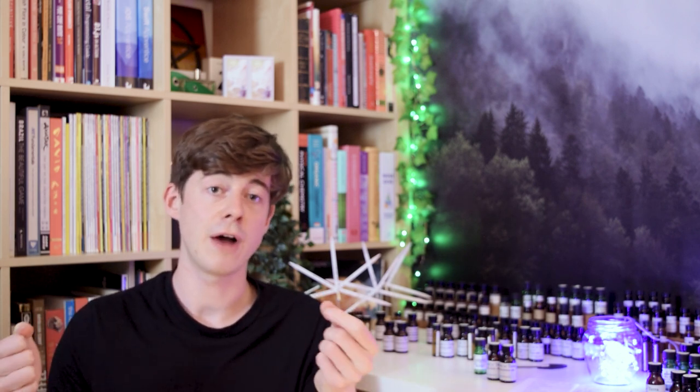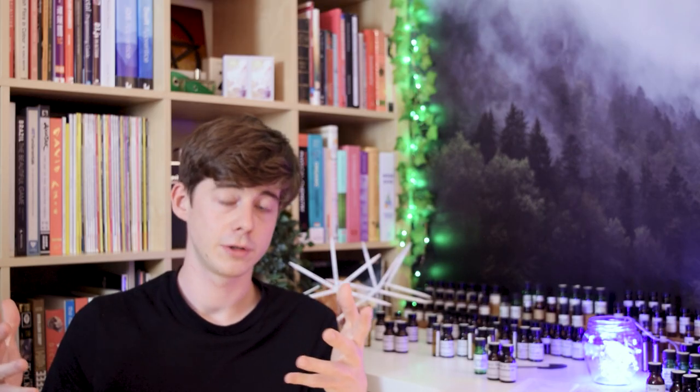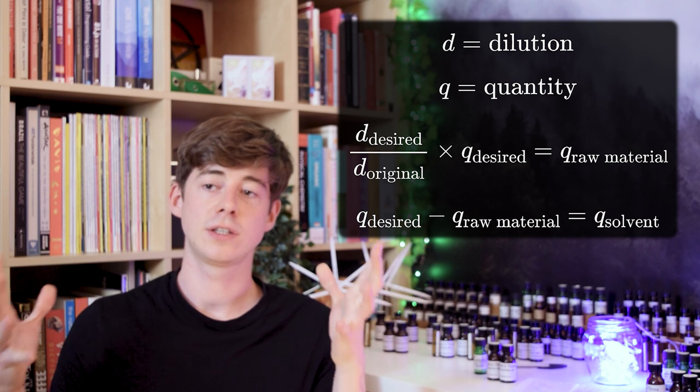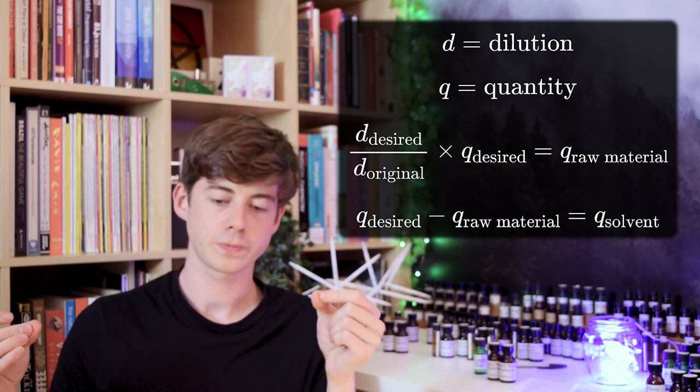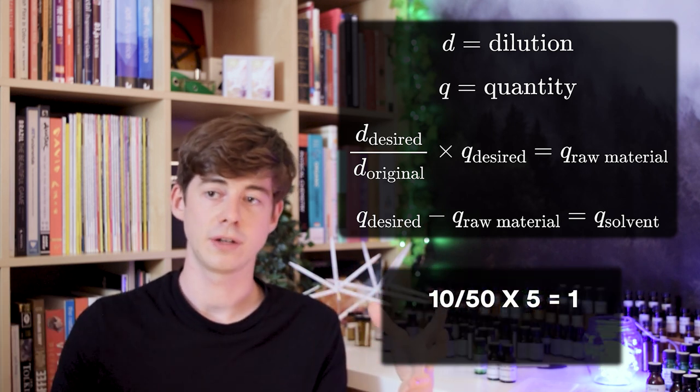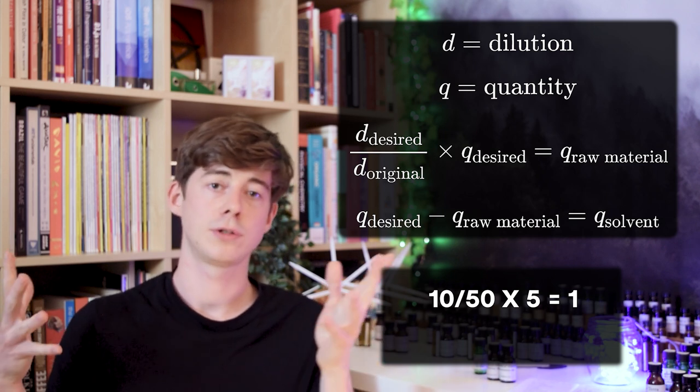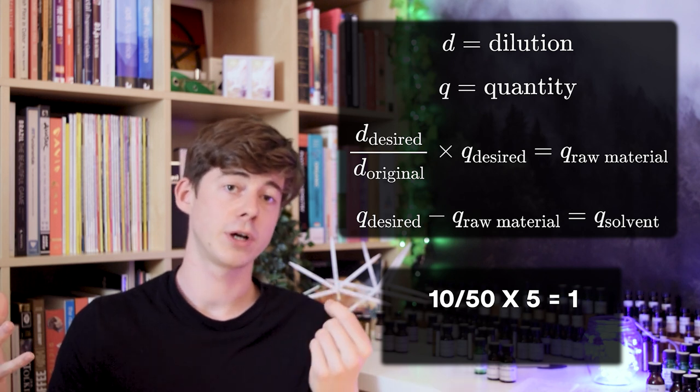Now let's move to the next stage: what if the raw material you're starting with is already pre-diluted? Say you bought a raw material from a supplier and they supplied it at 50%, or you already made a pre-dilution at 50% and now you want to dilute it further to a lower percentage. Let's say this time we have rosemary essential oil, already pre-diluted to 50%, and we want to make it a 10% dilution. We can simply use the same formula: take the desired dilution and divide by the original dilution. The desired dilution is still 10, but now the original dilution is 50, so we do 10 divided by 50, which gives us 0.2.